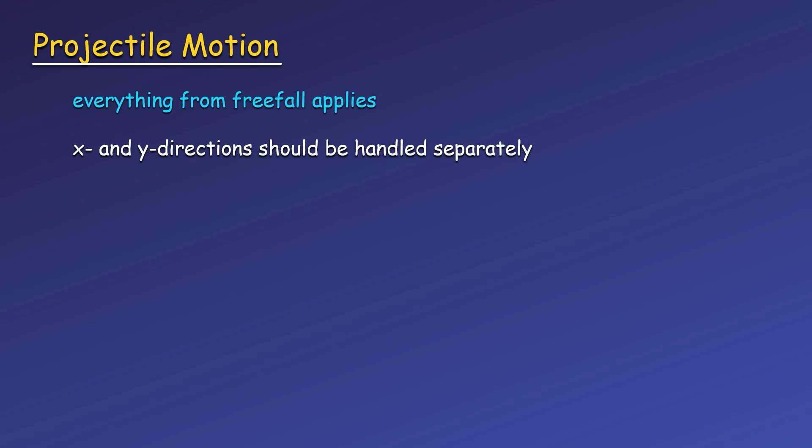The object is moving in both x and y directions at the same time, even though they can be analyzed separately. The two directions are connected by time, which is the only quantity that will show up in equations for both directions. For example, an object can only move horizontally as long as it's in the air. The time of flight depends on the y component of initial velocity and the y position where the object starts and ends. We can use information about the object's vertical motion to find the time in the air, and then use that to figure out how far the object moves.